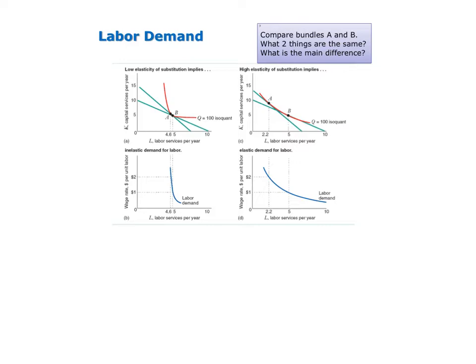That's what we see in the top two graphs on this slide. For each graph, imagine the firm is initially producing its quantity of a hundred units by choosing the cost minimizing bundle, bundle A.